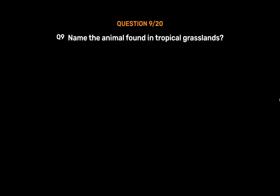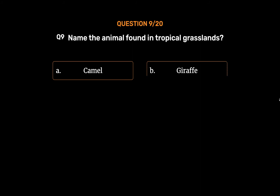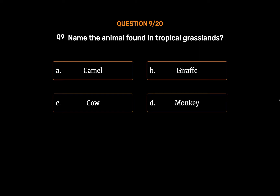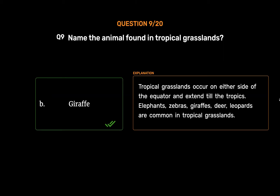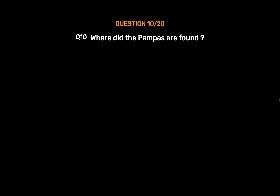Question number 9: Name the animal found in tropical grasslands. Option A: Camel. Option B: Giraffe. Option C: Cow. Option D: Monkey. The correct answer is Option B: Giraffe. Tropical grasslands occur on either side of the equator and extend till the tropics. Elephants, zebras, giraffes, deer, and leopards are common in tropical grasslands.